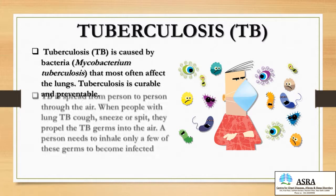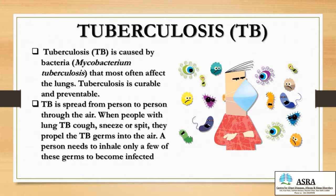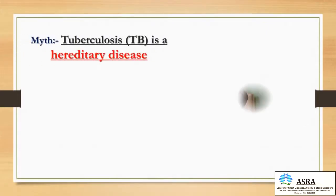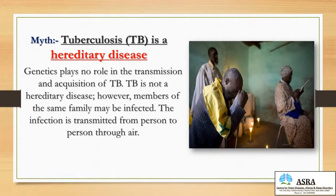Tuberculosis, or TB, is caused by a bacteria called Mycobacterium tuberculosis that most often affects the lungs. It is curable and preventable. TB is spread from person to person through the air — when people with pulmonary TB cough, sneeze, or spit, they propel the germs into the air. A person needs to inhale only a few of these germs to become infected.